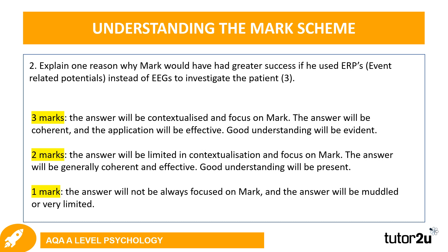For question two: explain one reason why Mark would have had greater success if he used ERPs — event-related potentials — instead of EEGs to investigate the patient. Three marks available. You would achieve one mark if the answer was not very focused on Mark and was muddled or very limited; two marks if the answer is limited in contextualisation but generally coherent and shows good understanding; and three marks — full marks — if the answer is contextualised, focused on Mark, coherent, effective, and demonstrates good understanding.